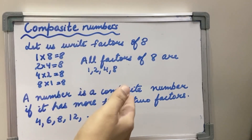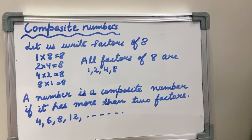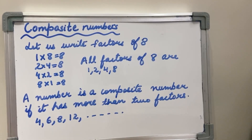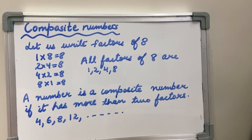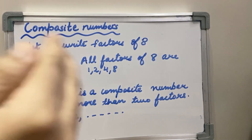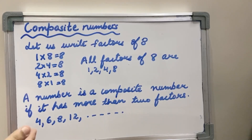All even numbers, because they are divisible by 2, are all composite numbers. Whatever multiples of 3 are there, they will be divided by 3; whatever multiples of 4 are there, they will be divided by 4 — so those multiples will not be prime numbers. Only prime numbers have 2 factors. So numbers like 2, 3, 5, 7 are prime numbers, and numbers like 4, 6, 8 and 12 are all composite numbers.